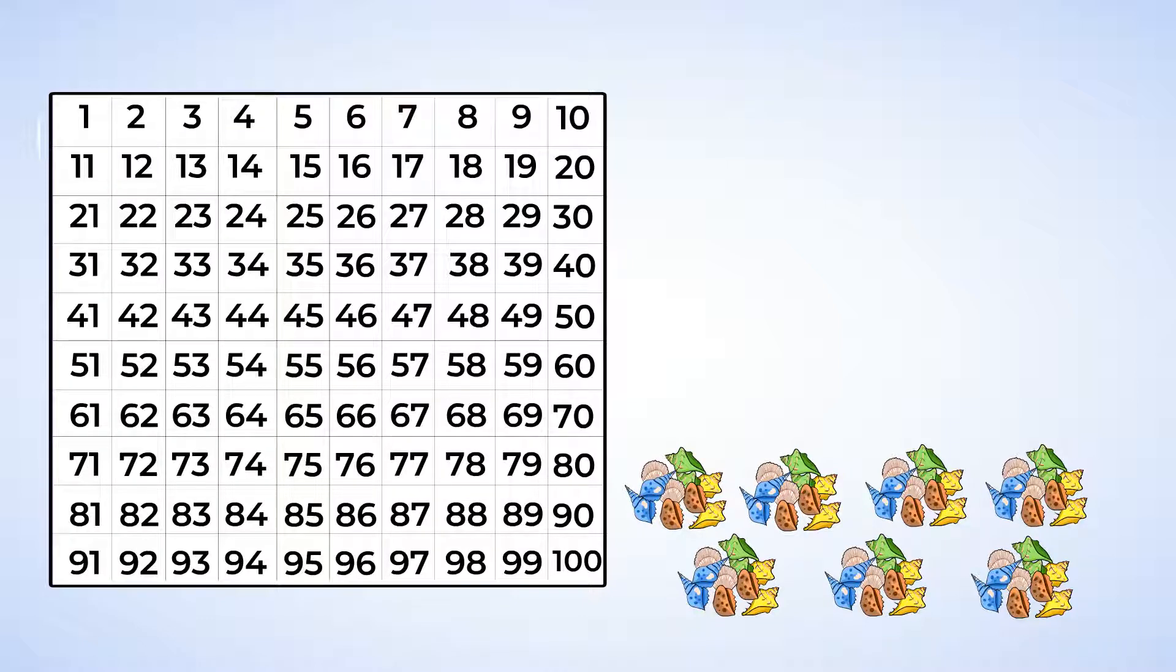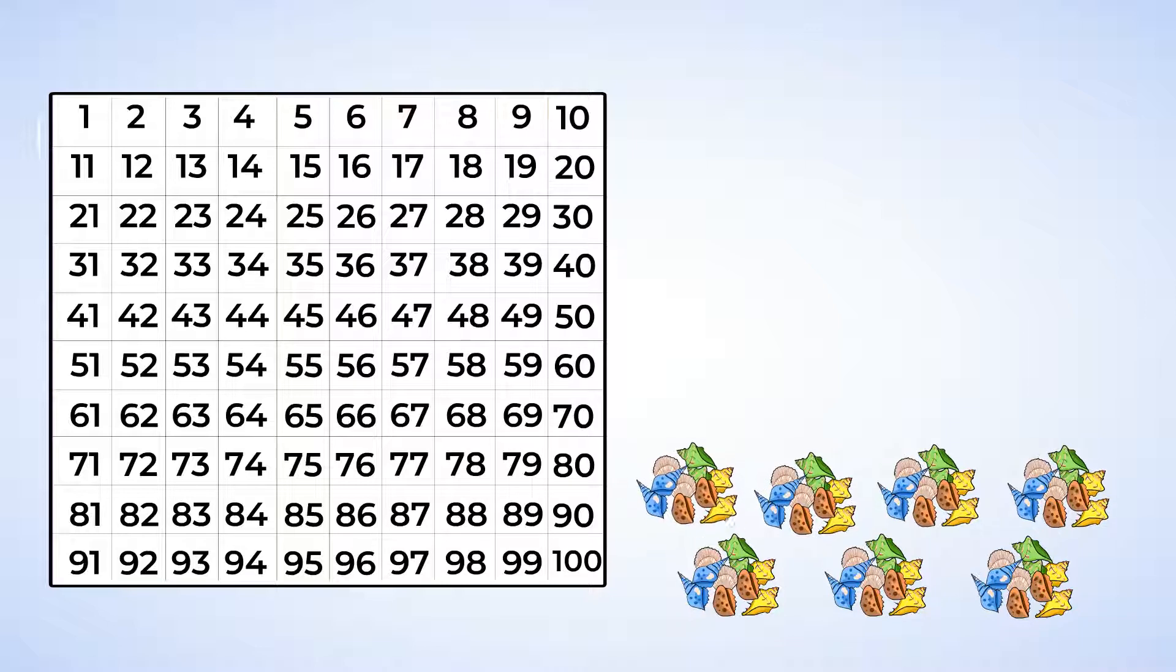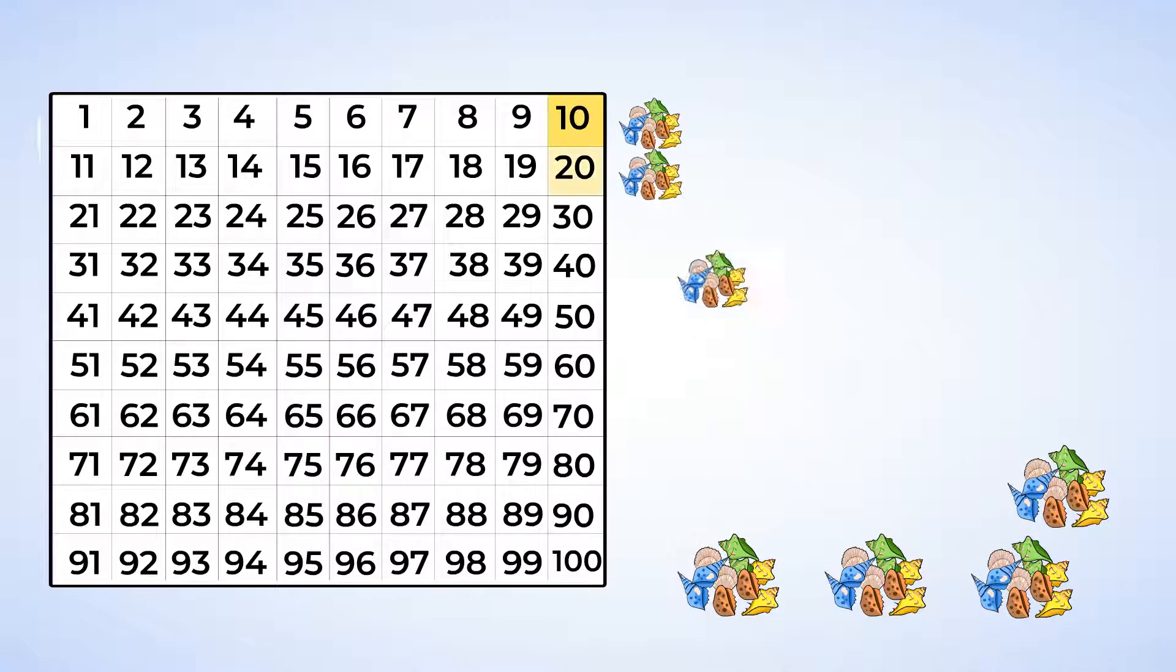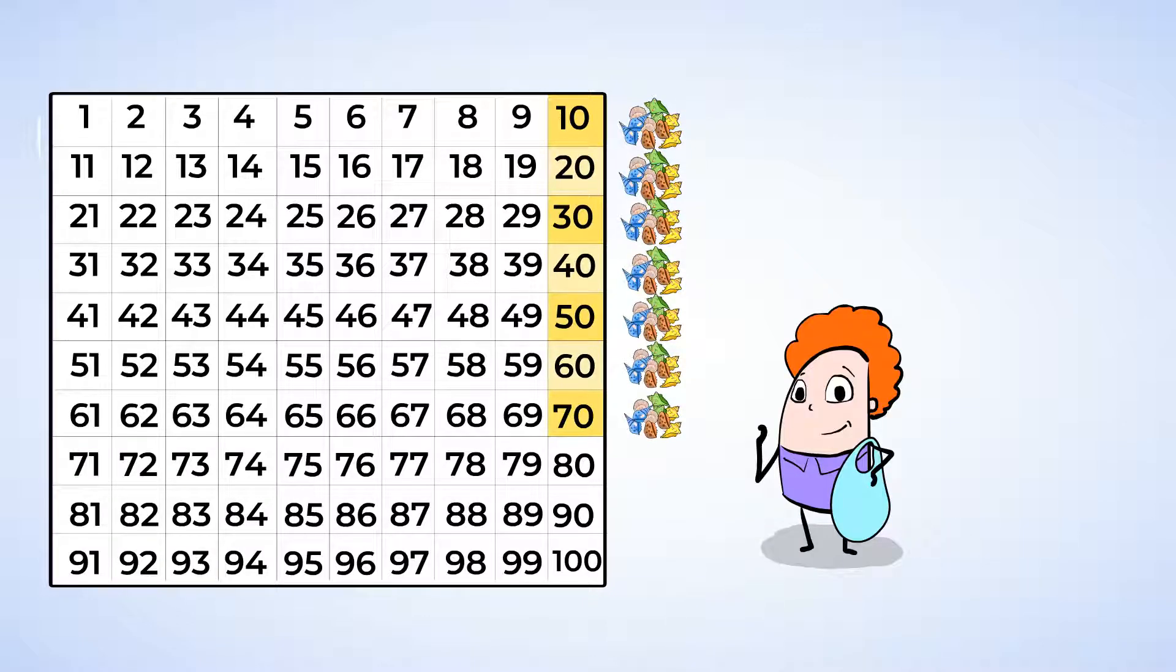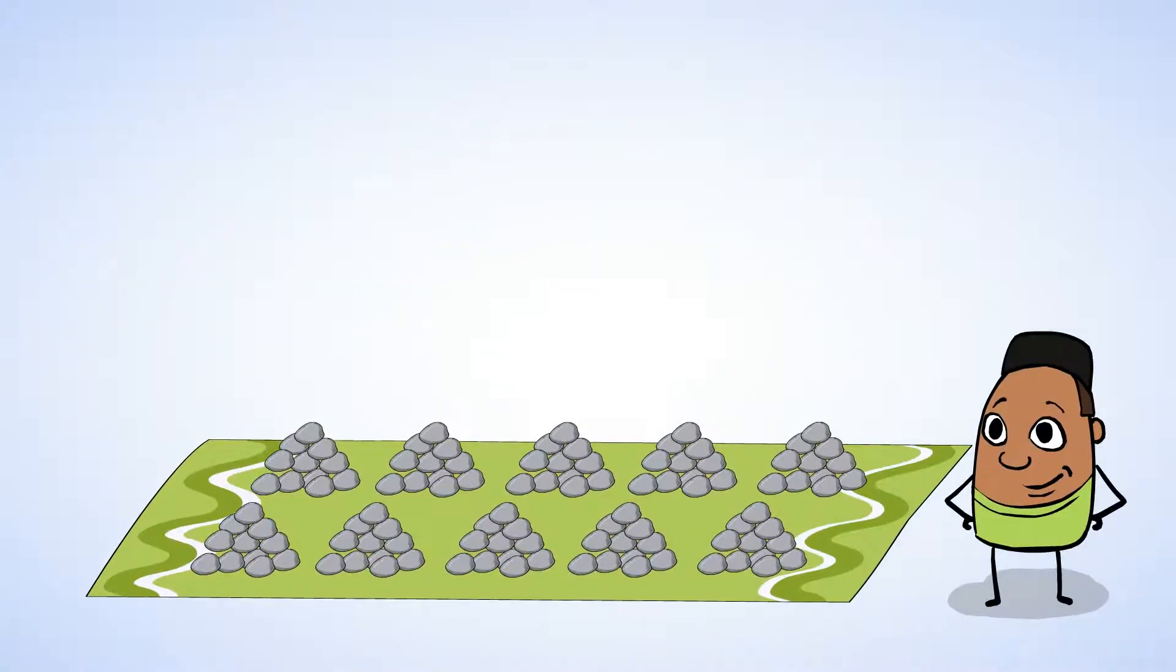We know that each row has 10 shells. So let's try counting by 10s. 10, 20, 30, 40, 50, 60, 70. Great job. You counted up to 70 by 10s. Eric sure did collect a lot of shells. I wonder if his arm is tired from carrying them all. I also wonder if he's going to make something with all those shells.